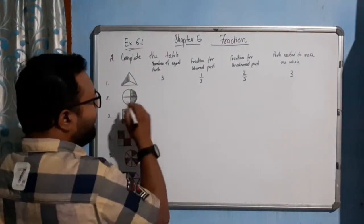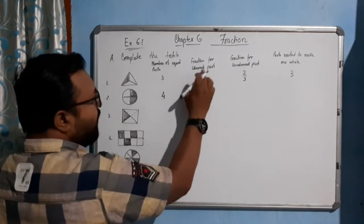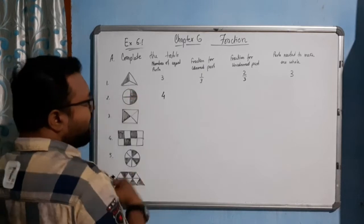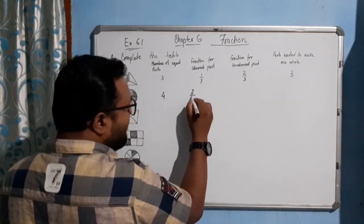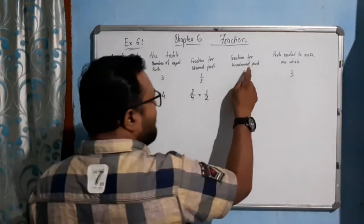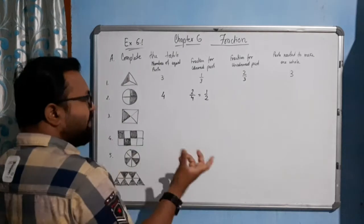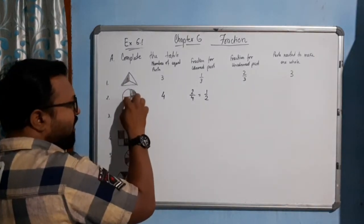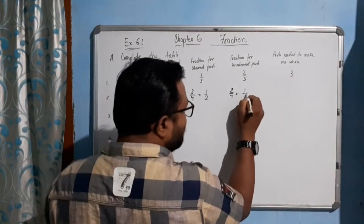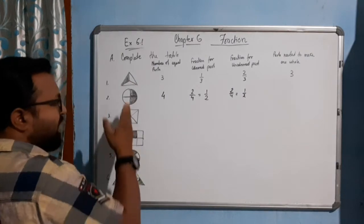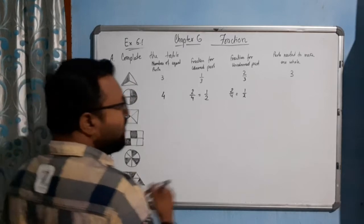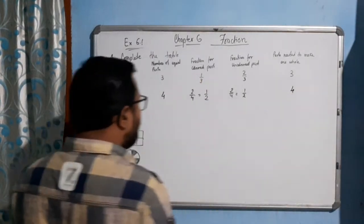Now for this case, how many equal parts do we have here? We have four equal parts. How many parts are colored? We can see two parts are colored out of four parts, so we can write 2/4, or simply we can write half. How many parts are uncolored? Two parts are not colored out of four parts, so 2/4, equal to half. How many parts are required to make a whole? All four parts — so 4.